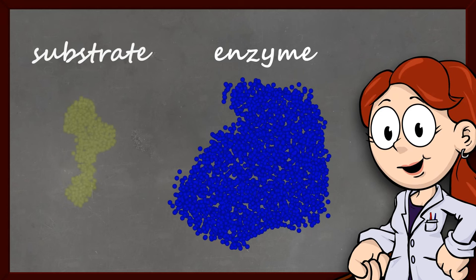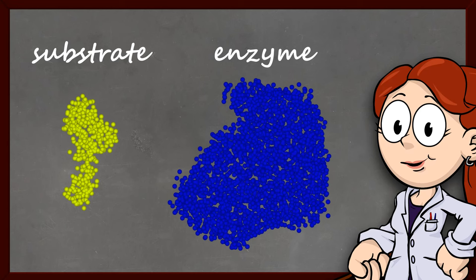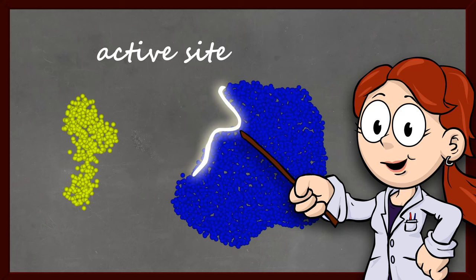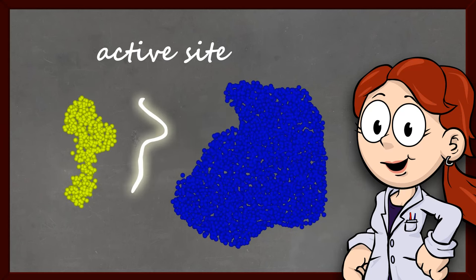The reactant that an enzyme acts upon is called its substrate. An enzyme interacts with its substrate at a specific location called the active site of the enzyme. The shape of the active site is complementary to its substrate,